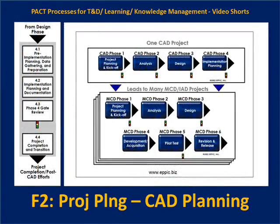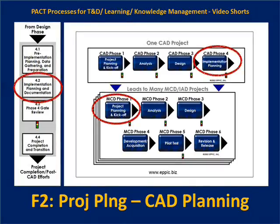One CAD project with all of its gaps prioritized in the fourth phase leads to many downstream MCD and IED efforts — modular curriculum development and acquisition, and instructional activity development and acquisition. In phase four, sub-phase 4.2, the implementation planning and documentation is reviewed in the gate review meeting and approved or modified by the project steering team, which dictates what kinds of projects we're going to have downstream in MCD and IED.